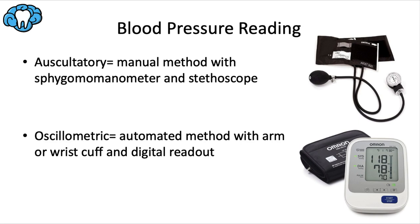Getting an accurate blood pressure reading is an important vital sign to record before dental procedures. The auscultatory method involves placing the cuff snugly around the patient's upper arm just above the elbow and using a stethoscope to locate the brachial pulse — though not many dentists use this manual method today. An oscillometric device enables the more commonly used automated method where the cuff inflates and reads out the measurement with the push of a button. The AHA recommends arm cuffs as more accurate than wrist cuffs and finger monitors.